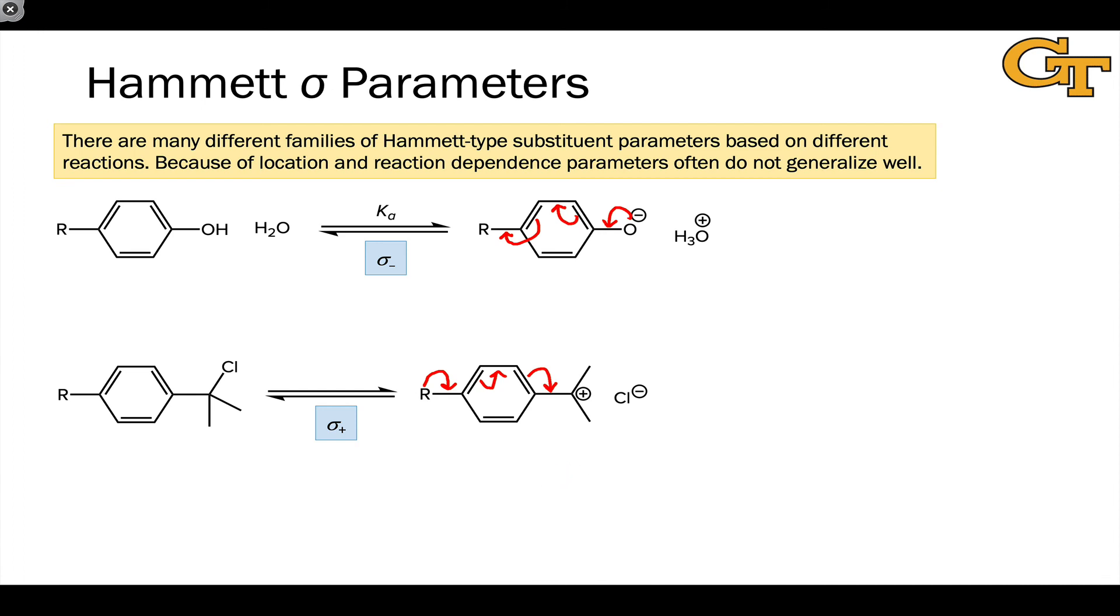This kind of active involvement of the substituent in electron donation or withdrawal via resonance is not possible with those substituted benzoic acids. Now that we've surveyed some of the different types of Hammett parameters, we're going to talk about how we can apply these as the independent variable, a roughly speaking scale of electron withdrawing or donating power that we can use to gain mechanistic insight into new organic reactions.